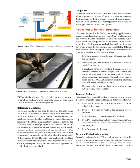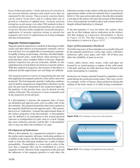Acoustic emission inspection: Acoustic emission is an NDI technique that involves placing acoustic emission sensors at various locations on an aircraft structure and then applying a load or stress. The materials emit sound and stress waves in the form of ultrasonic pulses. Cracks and areas of corrosion in the stressed airframe structure emit sound waves registered by the sensors. These acoustic emission bursts can be used to locate flaws and evaluate their rate of growth as a function of applied stress. Acoustic emission testing has an advantage over other NDI methods in that it can detect and locate all activated flaws in a structure in one test.